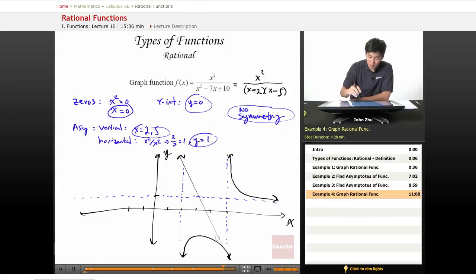So let's look for some zeros. So where does the function cross the x-axis? Well, we know it crosses at x equals 0. And what about the y-intercept at 0 as well?